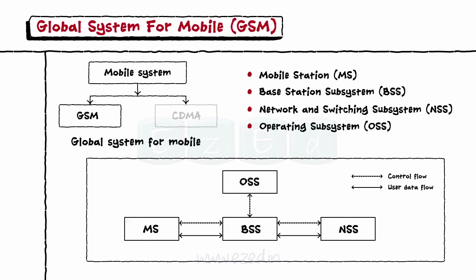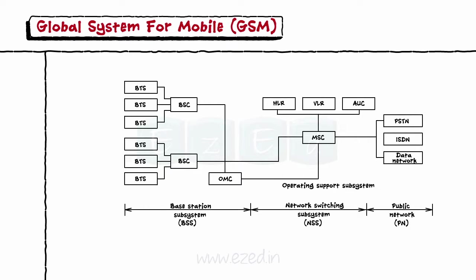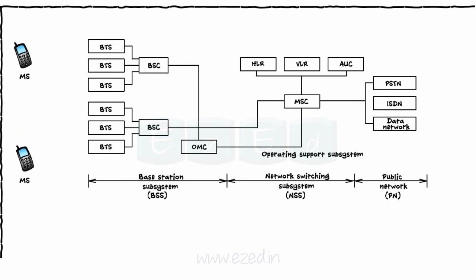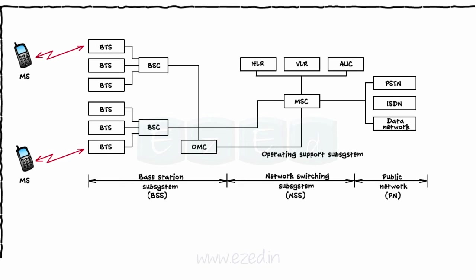The architecture of the GSM network is as shown. Mobile station (MS) is the device used for communication, such as a cell phone or fax machine. Base station subsystem (BSS) connects to MS via a radio interface and has two blocks: BTS, base transceiver system, and BSC, base station controller. Every MS connects to the BTS of its area, the BTS sends the signal to BSC, and many BTS are connected to one BSC. BSC is then connected to MSC, so the BSS system consists of BTS and BSC.